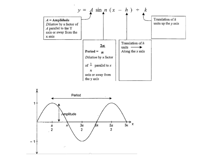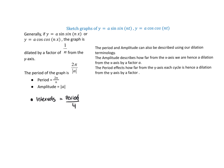This number gives the amplitude. This number affects the period, because you do 2π divided by whatever that number is. This number here will move the graph up and down, and next week we'll see that another number moves the graph left or right. Remember, the intervals are the period divided by 4.